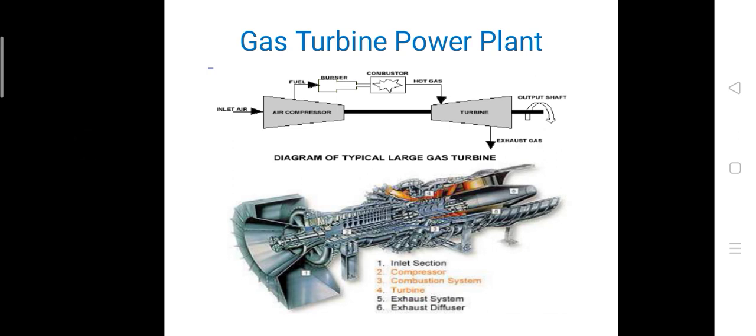This gas turbine power plant consists of three important components: air compressor, turbine, and combustor.